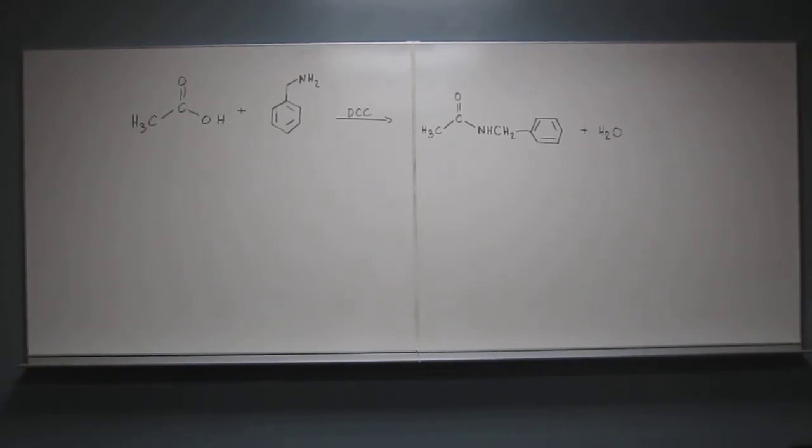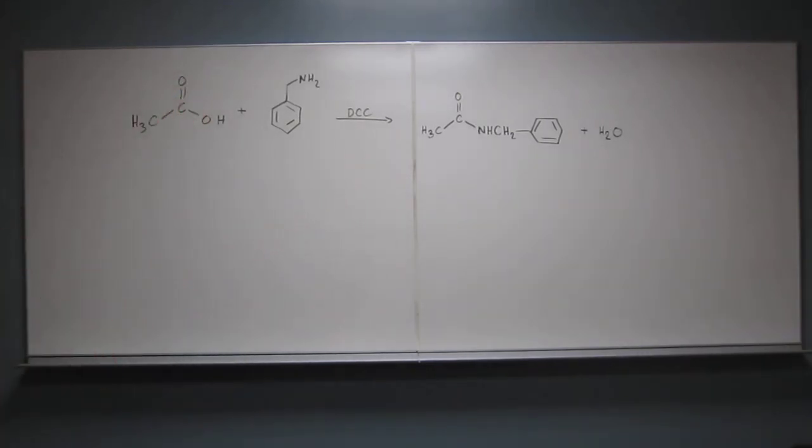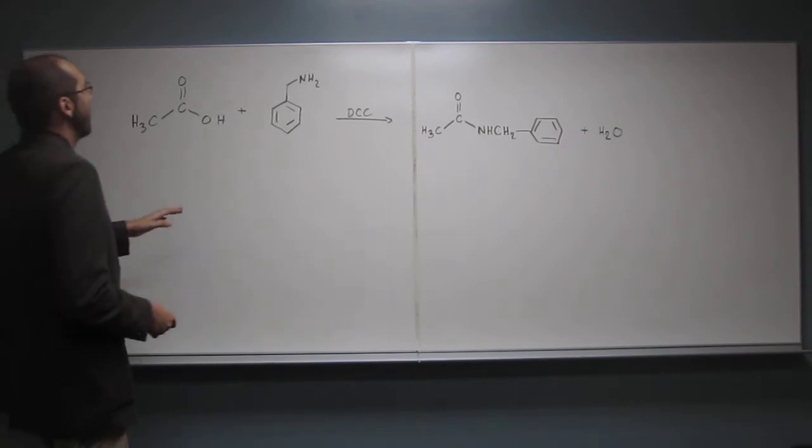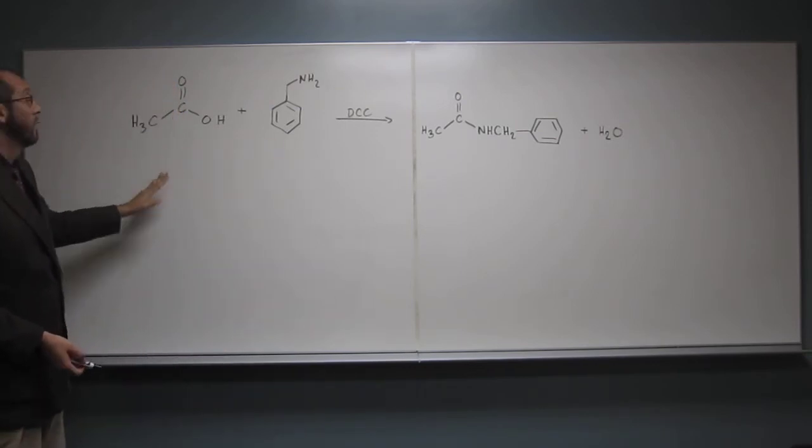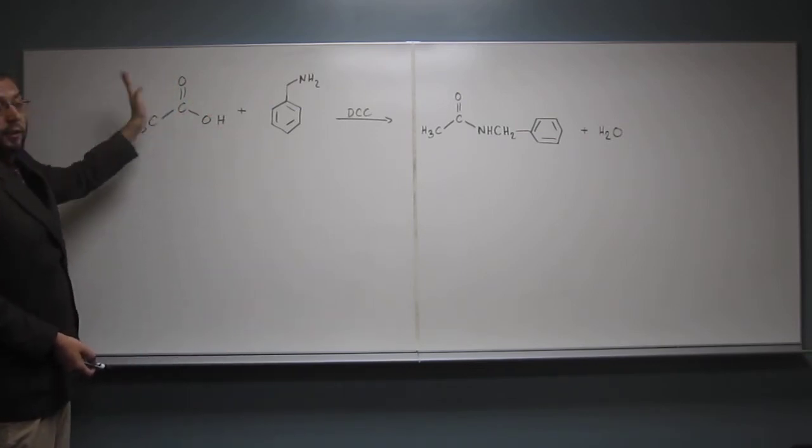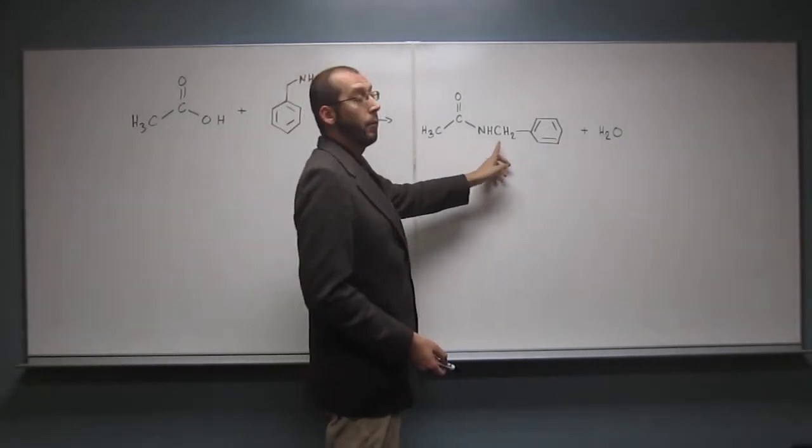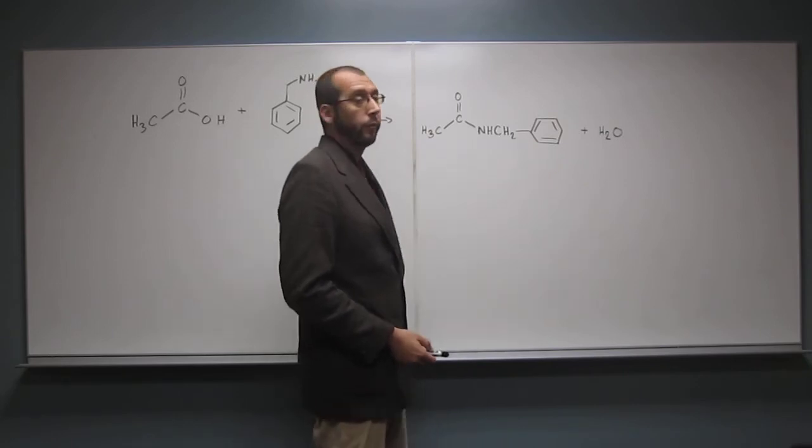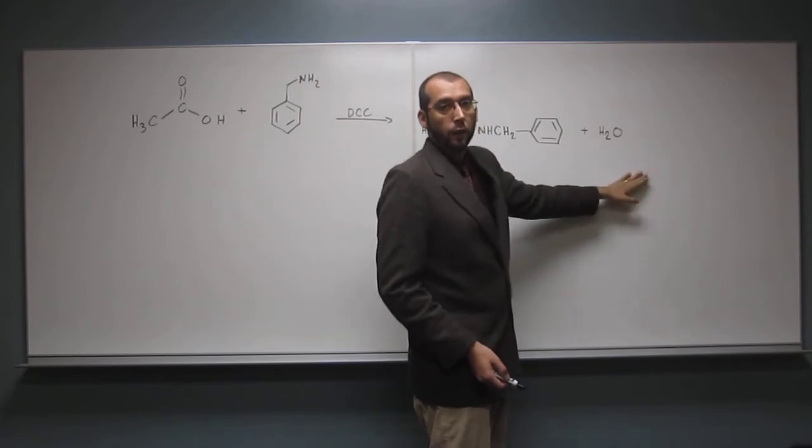Let's try this mechanism that was on the quiz. This is essentially the DCC coupling. The DCC is the coupling reagent. It's going to effectively connect the amine, benzyl amine, here with acetic acid. We've taken carboxylic acid and a primary amine and we've made this amide from them. You can also see it's a dehydrating reagent. We lose water.